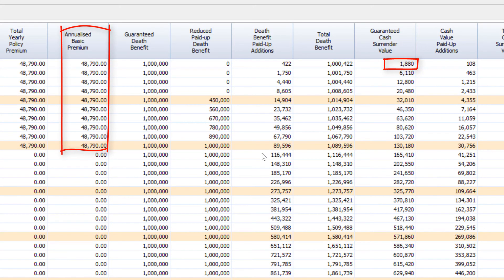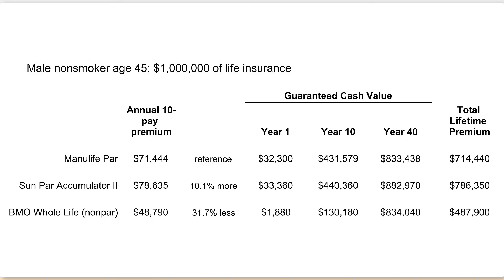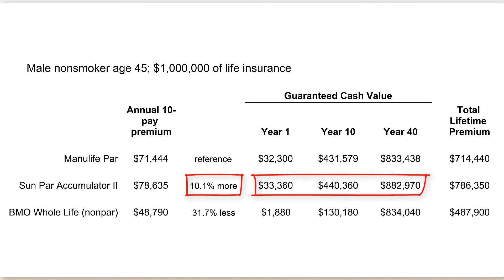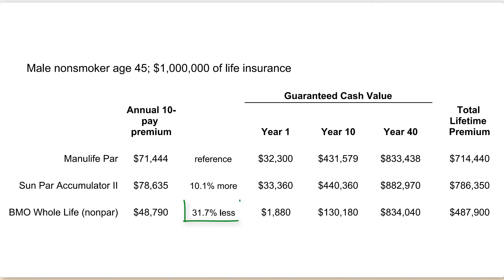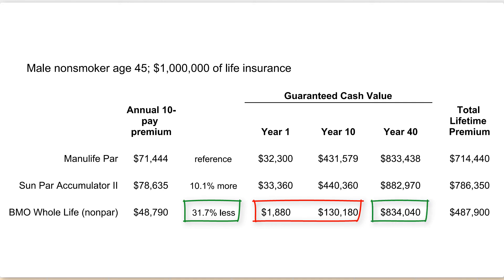BMO's premium is much lower, but the cash value in years 1 and 10 is also much lower. This shows that products are tuned in different ways, each with pros and cons. Sun is charging 10% more, but their cash values are not 10% more. BMO is charging considerably less, but their cash values are lower — though in the longer term, their cash values are really good.